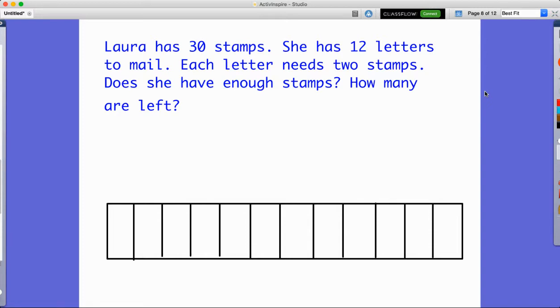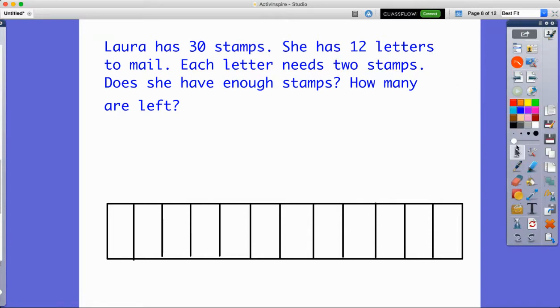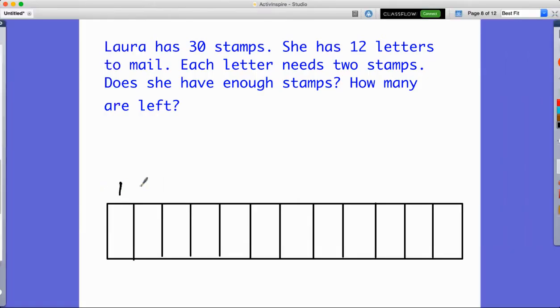So I'm going to use this tape diagram to help me. These are going to represent my letters. I'm not going to do anything with the 30 stamps yet because I need to find out how many are going to be on each of these 12 letters. So the tape diagram is going to represent the 12 letters. And then each one of these is going to have two.